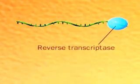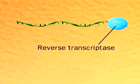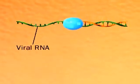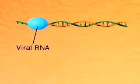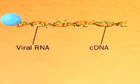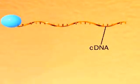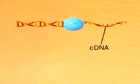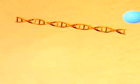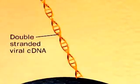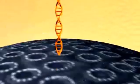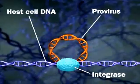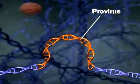Using reverse transcriptase brought in by the virus, the viral RNA makes a complementary cDNA. The viral RNA degrades. The cDNA is the template for a second DNA strand. The double-stranded DNA enters the host cell's nucleus and integrates into a chromosome as a provirus.